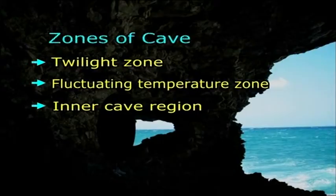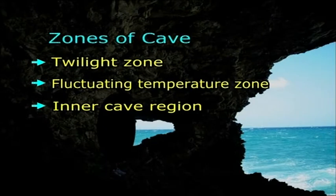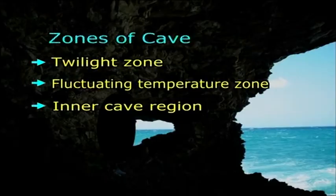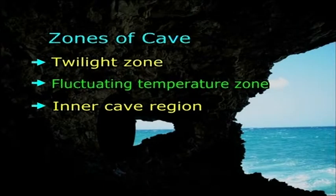Absence of sunlight and uniformity in temperature are the two striking physical characteristics existing in caves. The caves may be divided into different zones depending on variable physical conditions. The twilight zone comprises the mouth of the cave where a little amount of light may penetrate, constituting the transitional region. The fluctuating temperature zone is where seasonal or diurnal variation of temperature is felt.